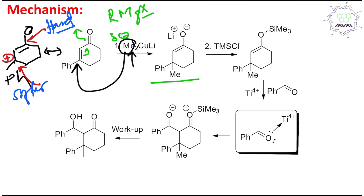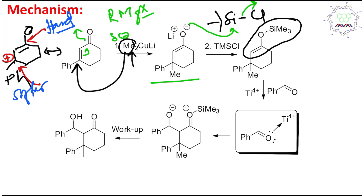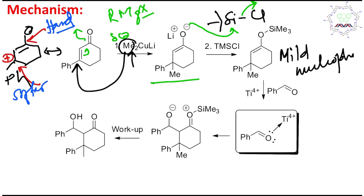This enolate reacts with TMSCl — trimethylsilyl chloride — which is an enolate trapping agent, as I have discussed in dedicated lectures. It substitutes silicon and produces a silyl enol ether.